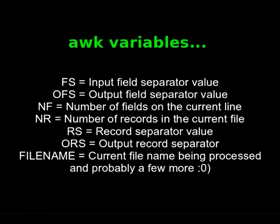Now that we've looked at some simple regexes, AWK also has some built-in variables: FS, which stands for field separator; OFS, which stands for output field separator; NF, which is number of fields on the current line; NR, which is number of records in the current file; RS, record separator value; ORS, output record separator value; FILENAME, which is the current file name being processed — and probably a few more.